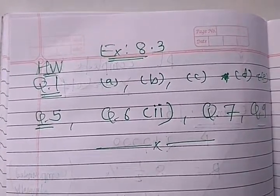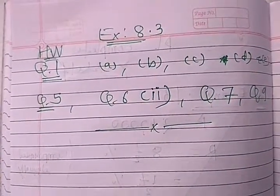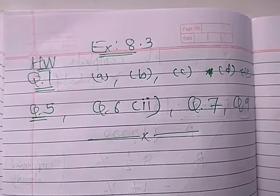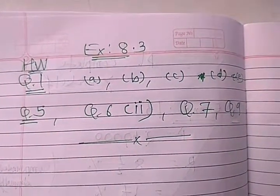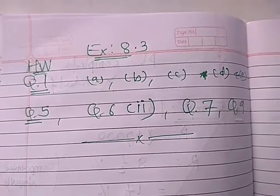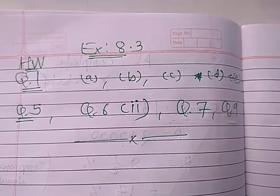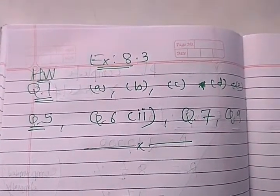Now exercise 8.3, there are some homework. Up till now whatever the sums that we have done, like that way you can find this. Question number 1 homework A, B, C, D and E. Question number 5, question number 6 two parts, and question number 7 and question number 9. So till then have a nice day, goodbye.